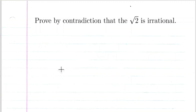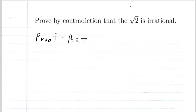Today we're going to prove by contradiction that the square root of two is irrational. For a proof by contradiction, we're going to assume the negation of the statement. So we're going to assume that the square root of two is rational.